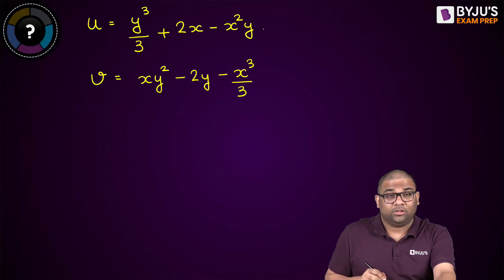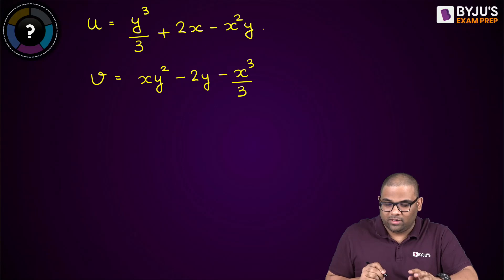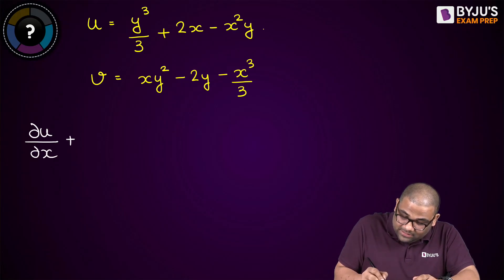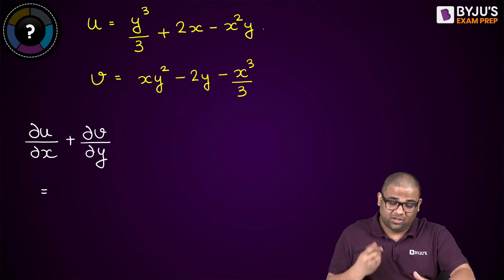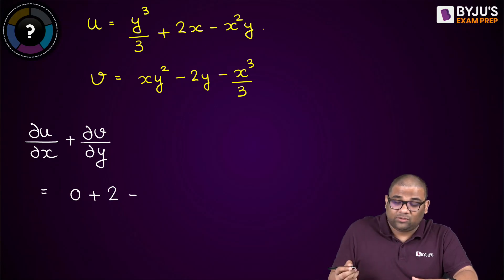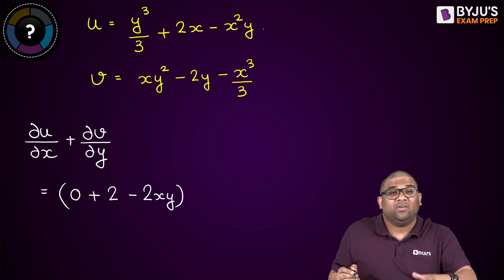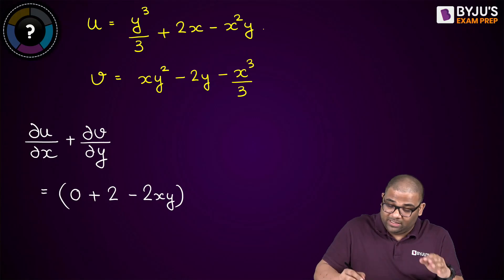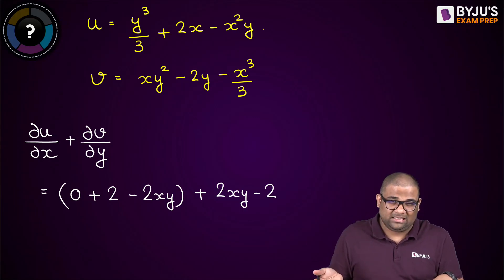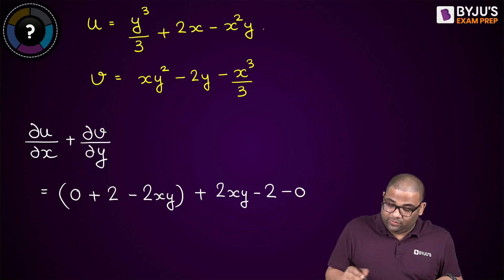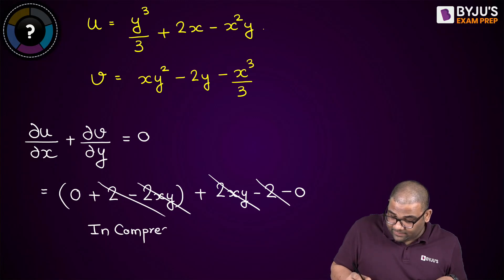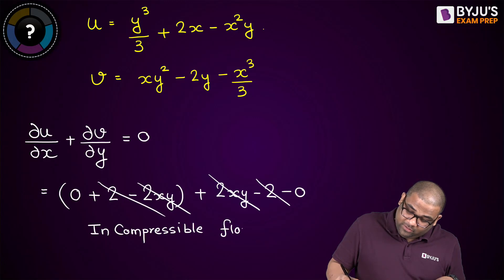Let us solve a previous GATE question. u and v are given, so it is 2D flow. To check incompressibility, compute ∂u/∂x + ∂v/∂y. Differentiating u with respect to x: y³ gives 0, 2x gives 2, and x²y gives 2xy. Differentiating v with respect to y: first term gives 2xy, second gives −2, and x gives 0. Adding: (2 + 2xy) + (2xy − 2) = 0. So the flow is incompressible.